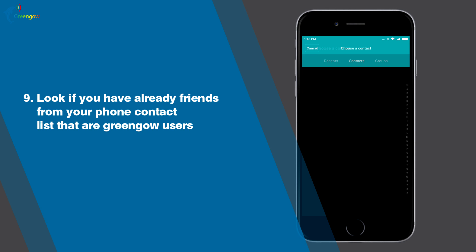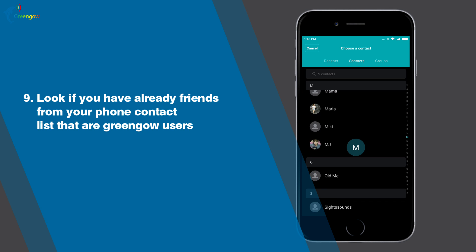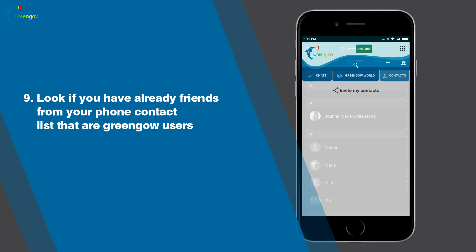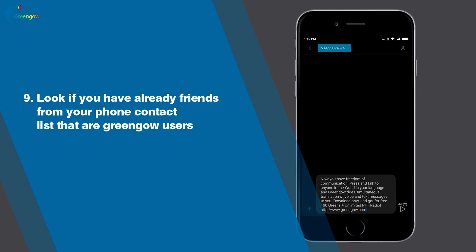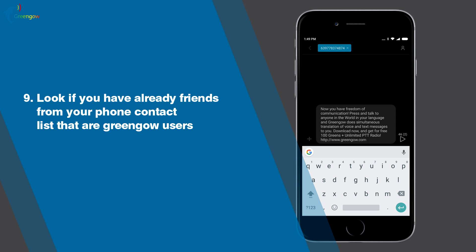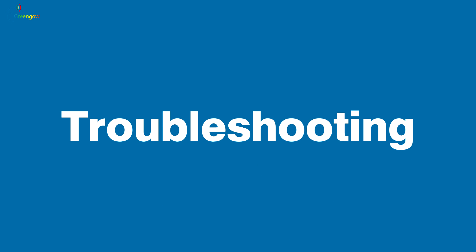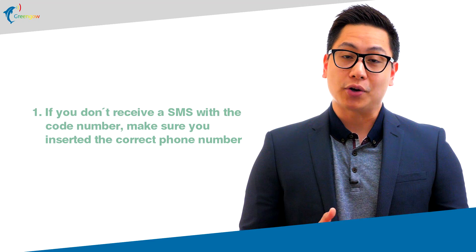Nine, check if you already have friends from your phone contact list who are Green Go users — they should show up automatically in the Contacts tab. If not, no problem: invite them to be a Green Go user, and as soon as they install it, Green Go will automatically import them from your contact list so you can talk to them.